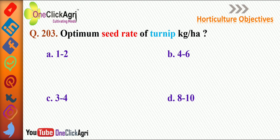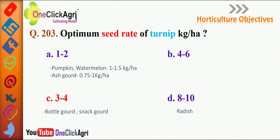The optimum seed rate of turnip per hectare is 3 to 4 kg. For bottle gourd and snake gourd it is 1 to 2 kg (or 1 to 1.5 kg) per hectare; for pumpkin and watermelon 1 to 1.5 kg per hectare; for ash gourd 0.75 to 1 kg per hectare; and for radish 8 to 10 kg per hectare.